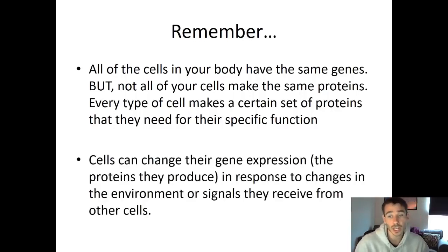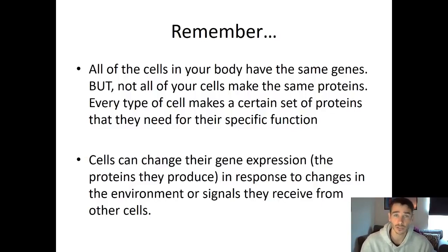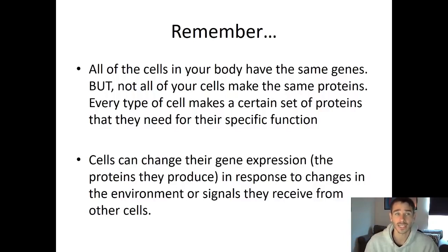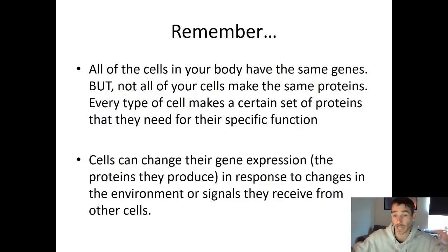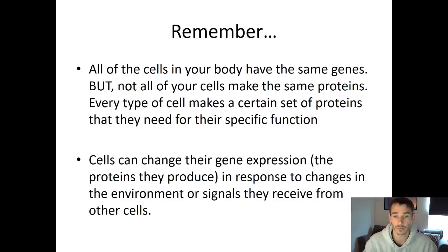Cells can change their gene expression — the proteins they produce. A cell can respond to its environment or signals from other cells that tell it to use certain genes or to turn off certain genes. Cells will make certain proteins from their genes, but they can be told by other cells to make more or less, or they can get signals from the outside environment, like an injury, that tells the cell it needs to change what it's doing.